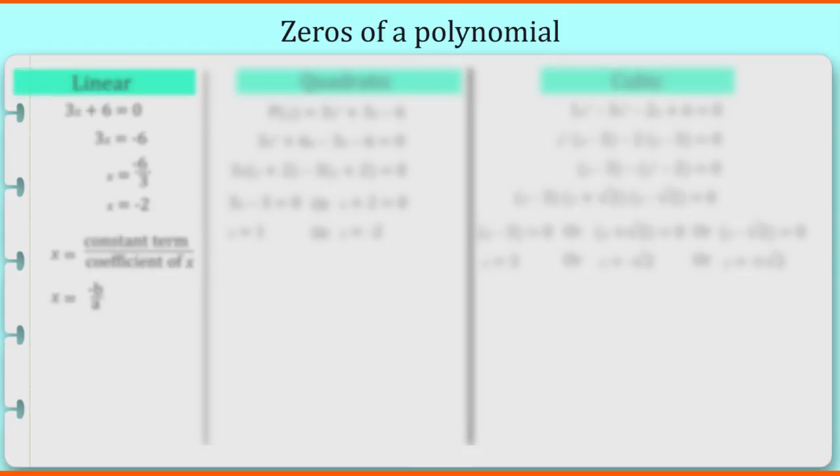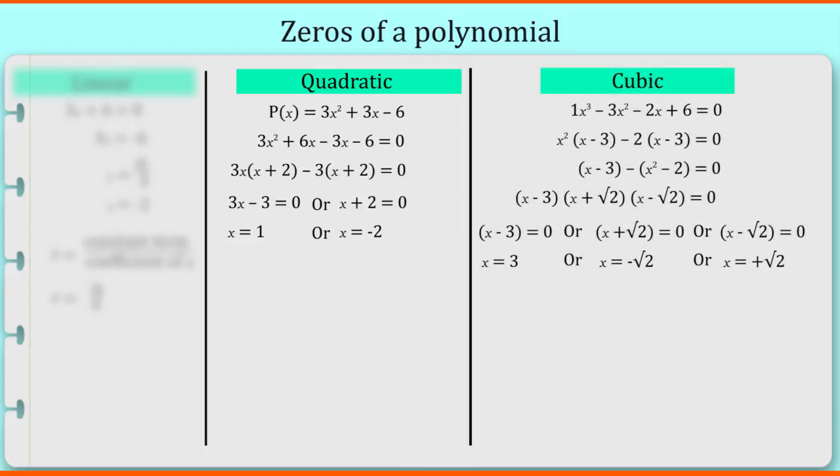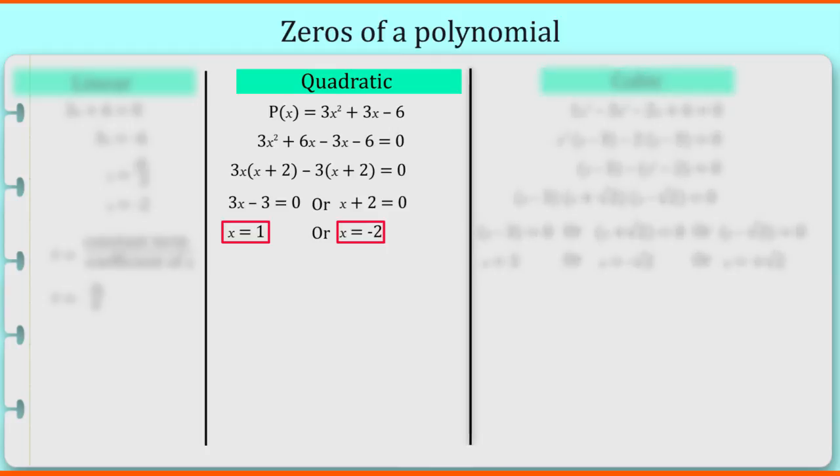But what about quadratic and cubic equation? As quadratic equation has more than 1 zero, what if we add the zeros or multiply them? By adding the zeros of the equation, we will get minus 1. We can write it as minus 1 by 1 and can also write it as minus b by a. Now if we multiply zeros, we will get minus 2 which can also be written as minus 2 by 1 which is in the form of c by a.